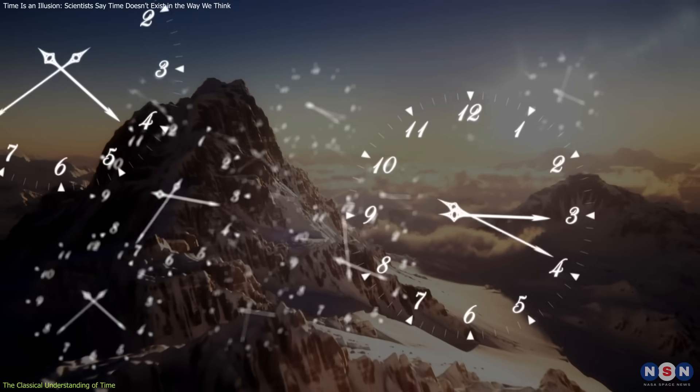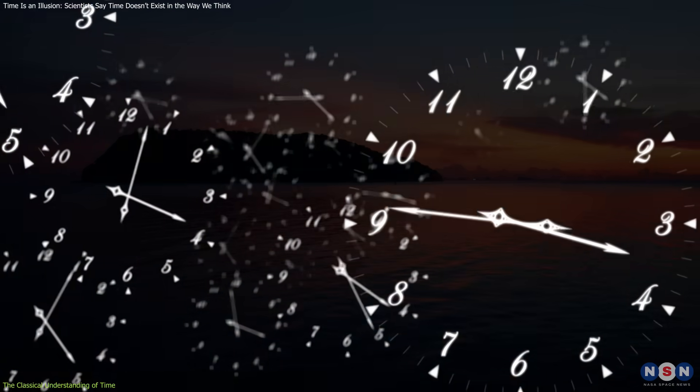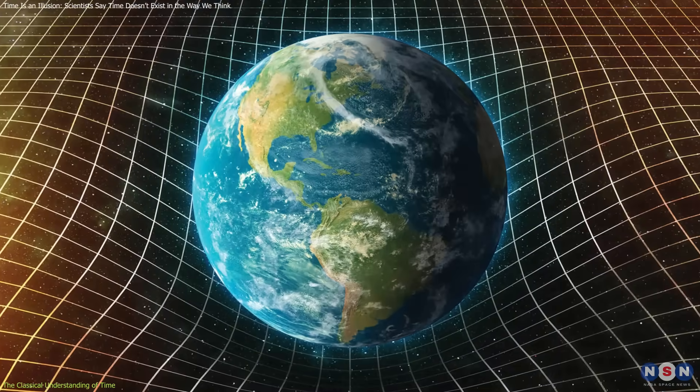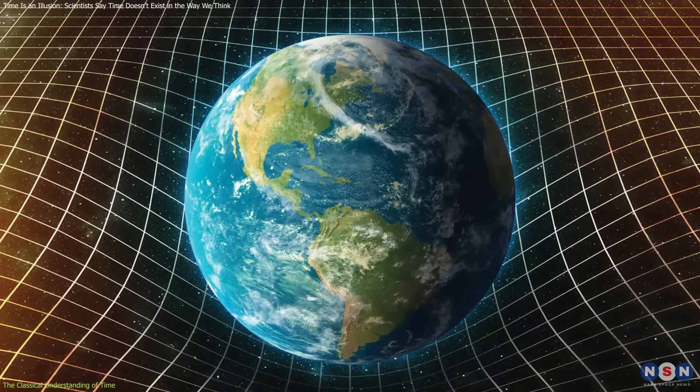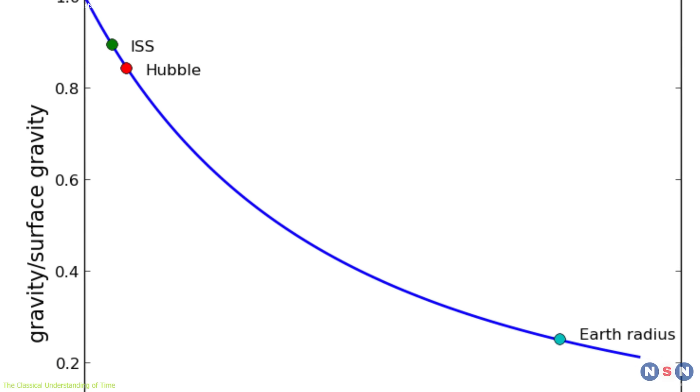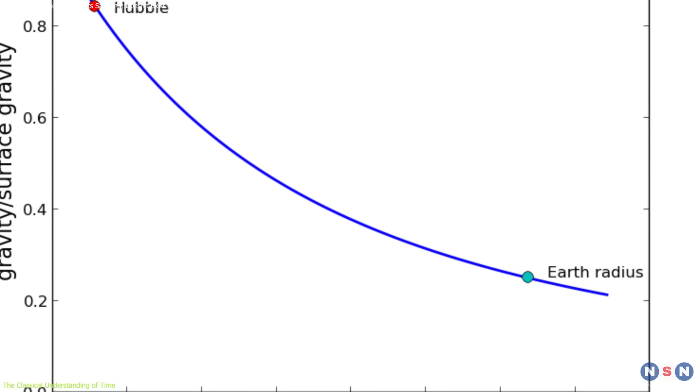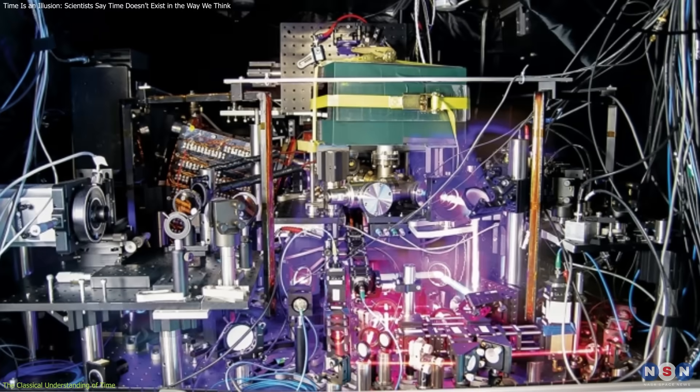For instance, time runs slightly faster on a mountaintop than at sea level because the strength of Earth's gravitational field decreases with altitude. This effect, though minor, has been confirmed by precise measurements using atomic clocks.